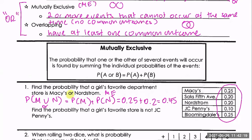The next question: find the probability that a girl's favorite store is not JC Penney. The answer is 0.90. If you see an apostrophe after a letter — like JC' — or a bar on top of it, that notation means 'complement,' which means 'not.' So not JC Penney can be written either way. You can calculate it by adding all stores that are not JC Penney, or by taking the total of 1 and subtracting JC Penney's probability of 0.10.